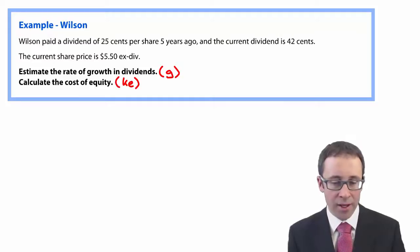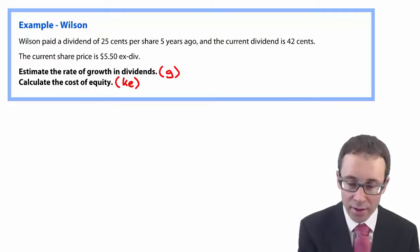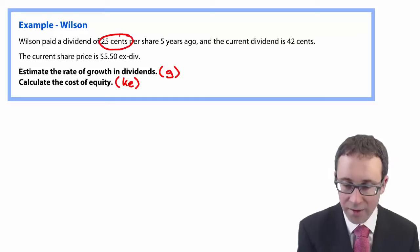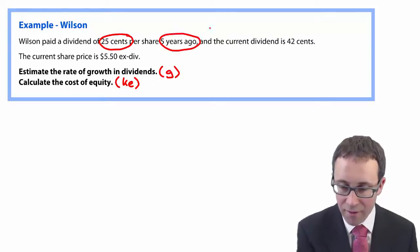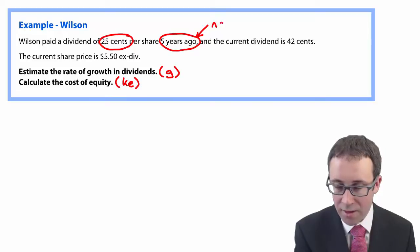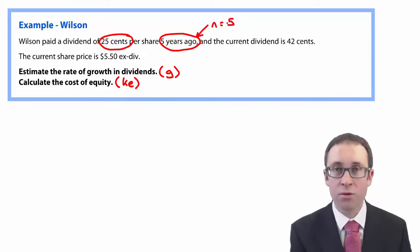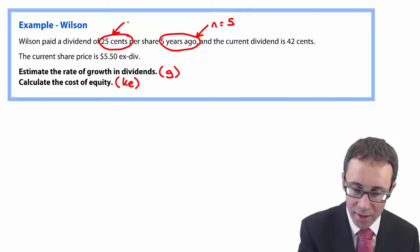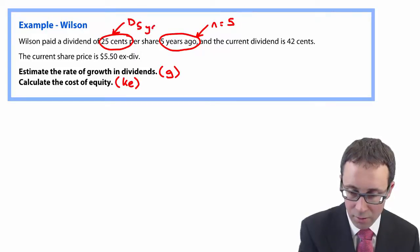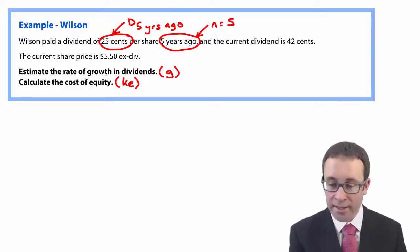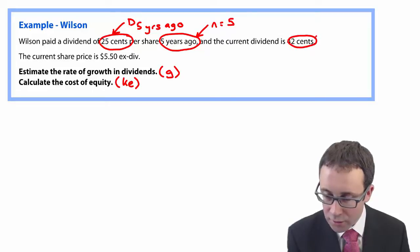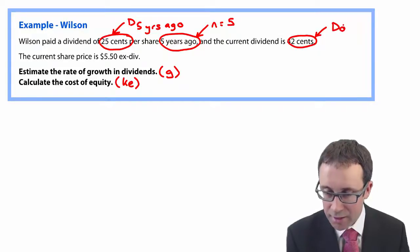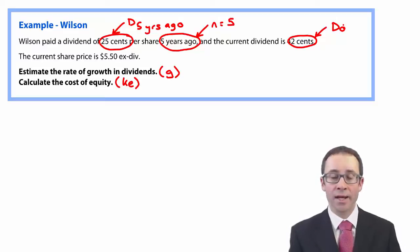Wilson paid a dividend of 25 cents five years ago, so N is equal to five and Dn is 25 cents. The current dividend D0 is 42 cents. We now have enough information to work out the growth rate.